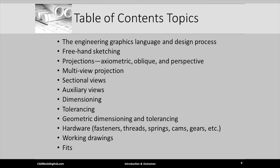Your textbook should have a chapter or two on the engineering graphics language and design process. It should have a chapter on freehand sketching. It should have a chapter or two on projections — axonometric, oblique, and perspective projections. There should be a chapter on multi-view projection, a chapter on sectional views, a chapter on auxiliary views, a chapter on dimensioning, a chapter on tolerancing, and a chapter on geometric dimensioning and tolerancing.